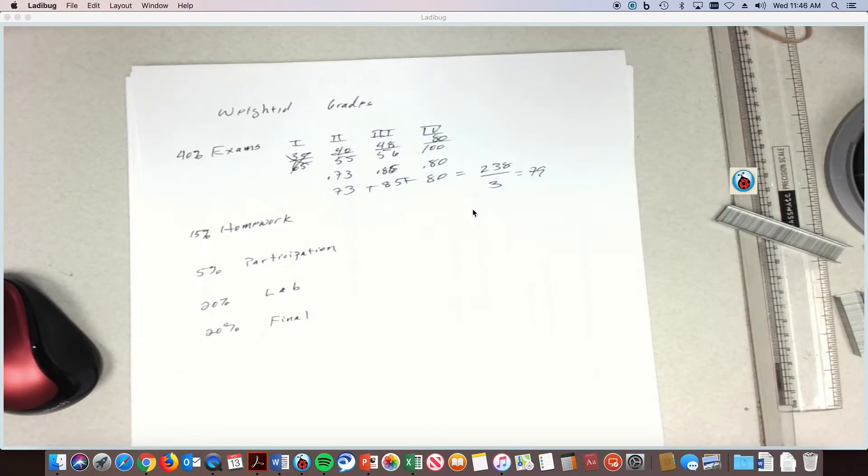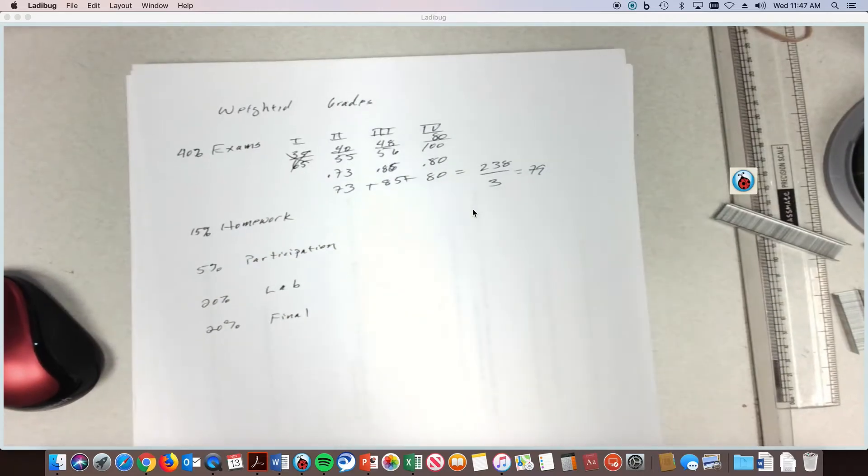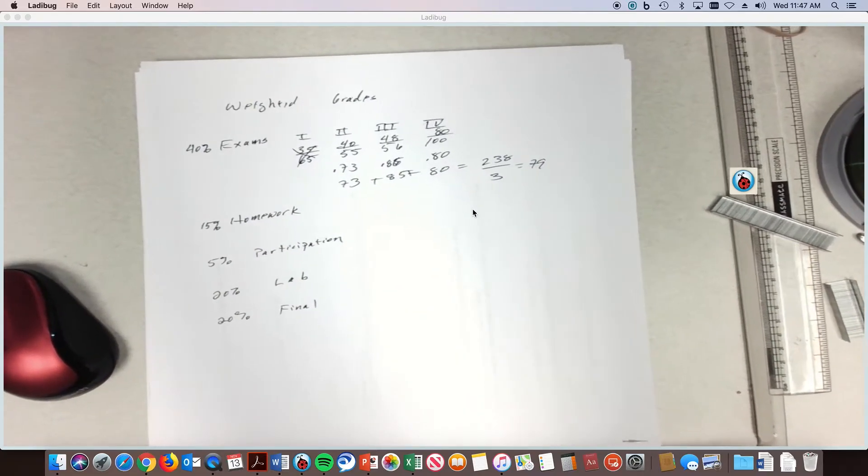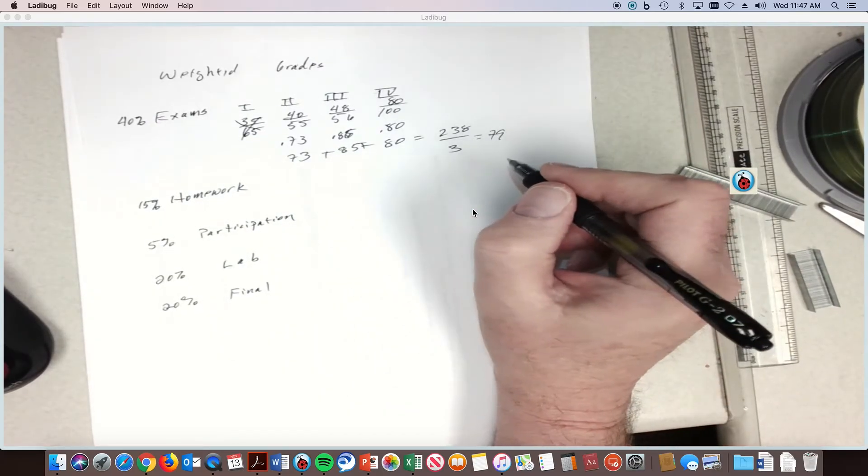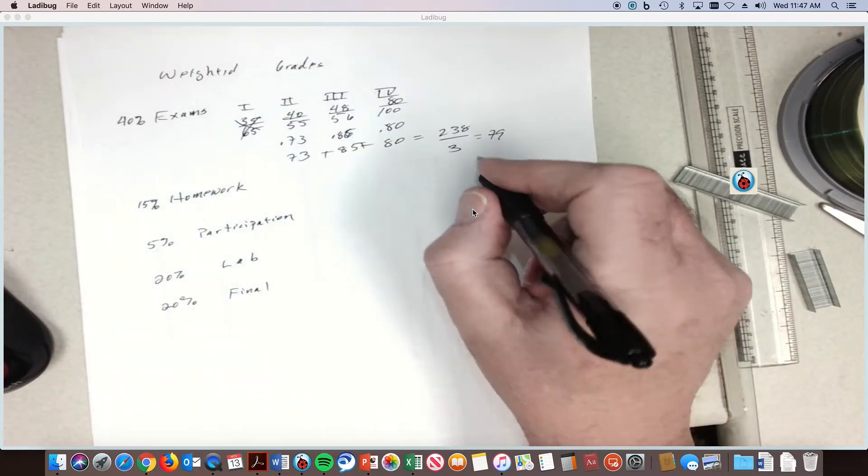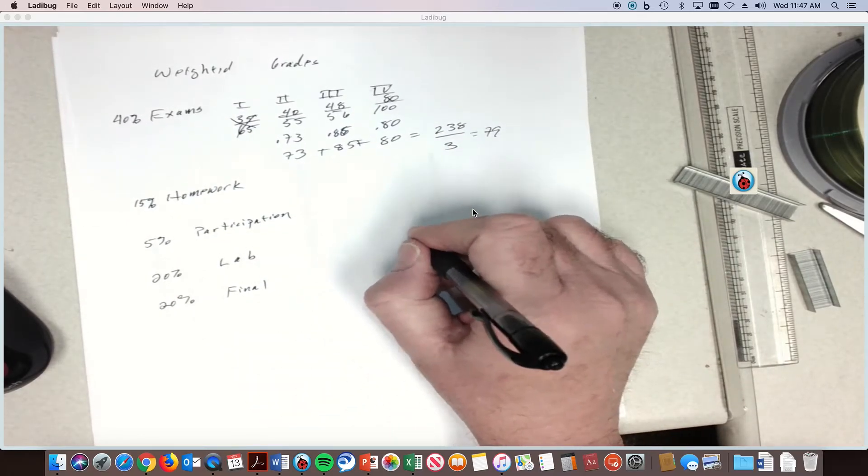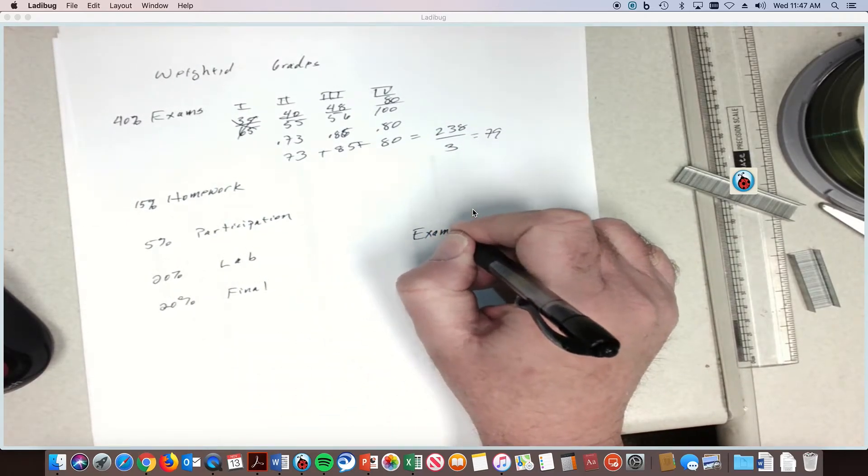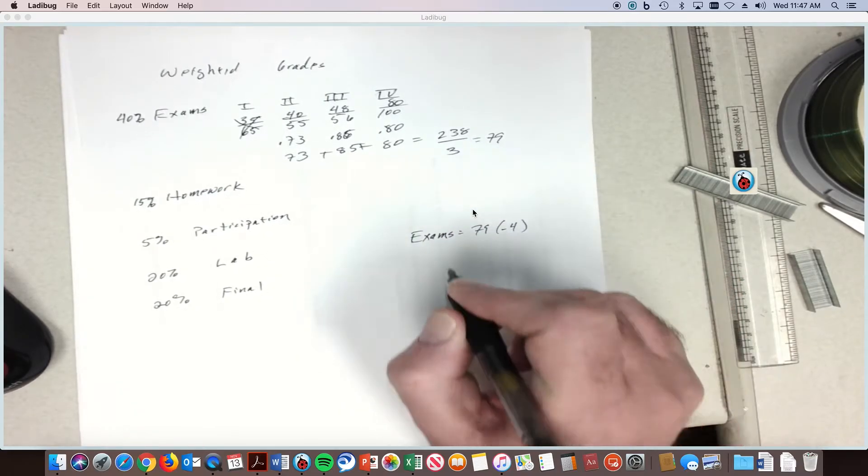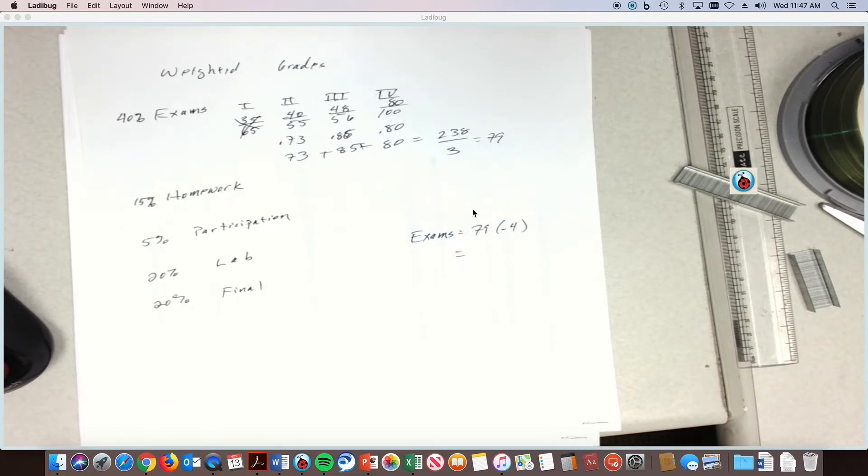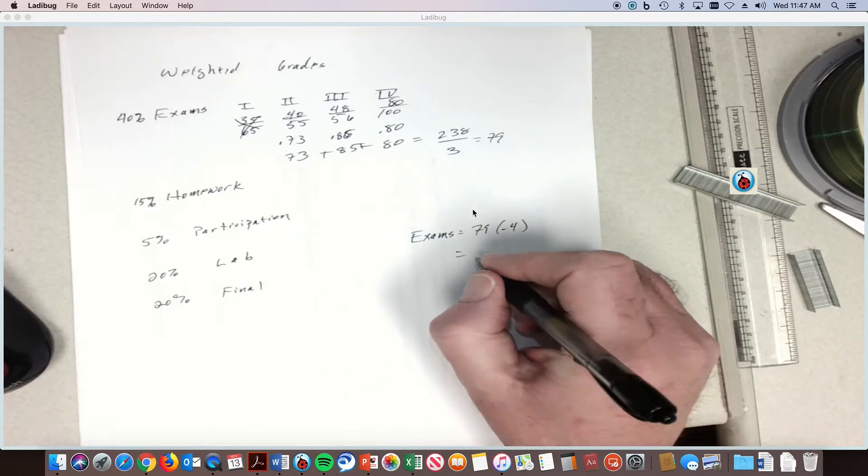That's in the B range, close to the B plus range. Double check the syllabus to see what the scores are. You got 79 but it's worth 40 percent, so for your exams, so far your exams grade is 79 times 0.4 because it's worth 40 percent of your grade, which is equal to 31.6.